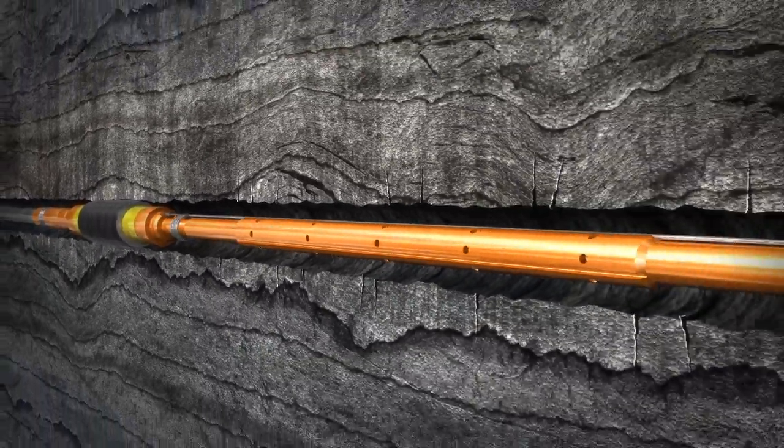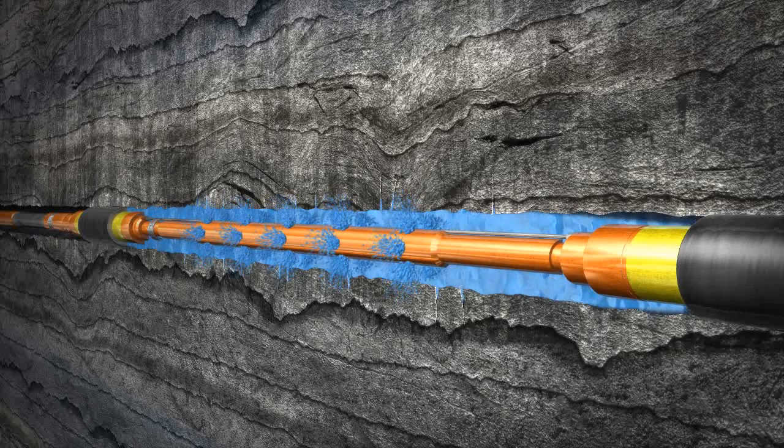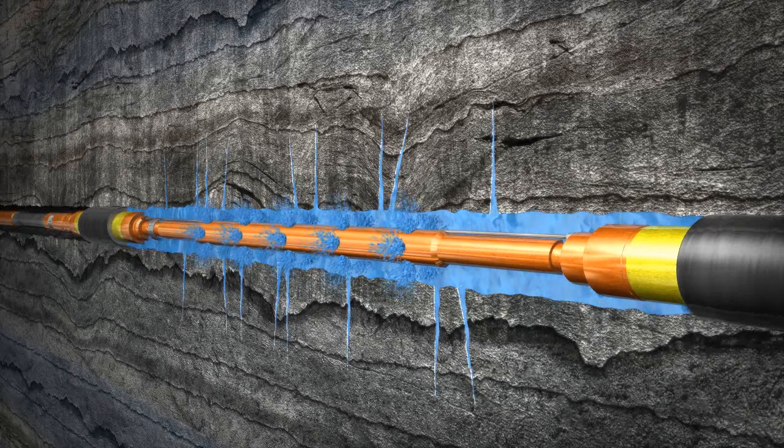When fracturing begins, the FRAC fluid is precisely placed into the surrounding formation through the perforated section between the two straddle packers.